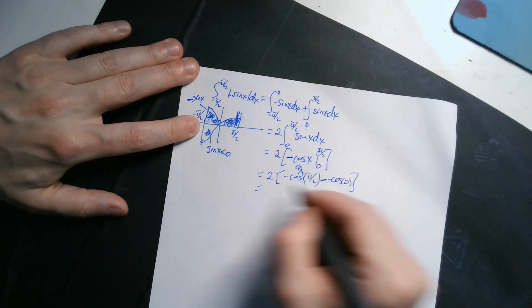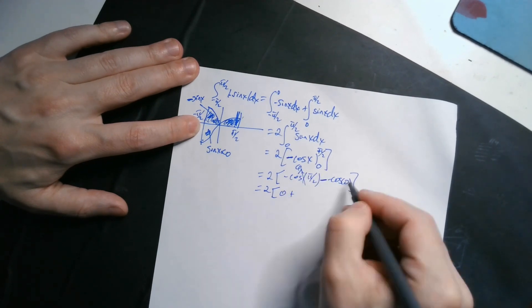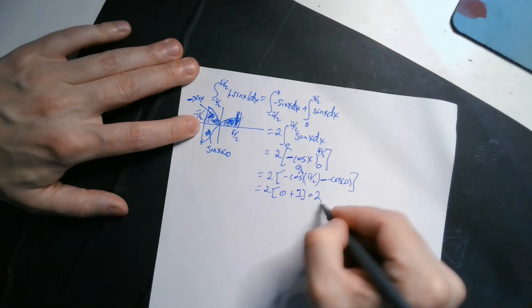So two negatives, 1 from here and 1 from the formula. So 2, and now this is 0, plus cosine of 0 is 1, so like this, so you end up with 2.